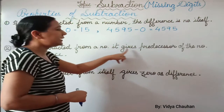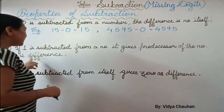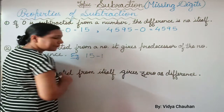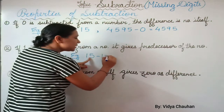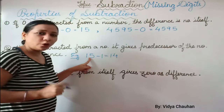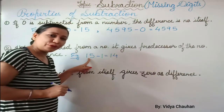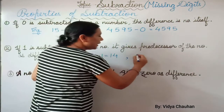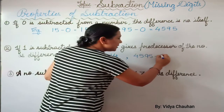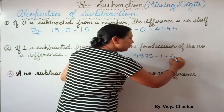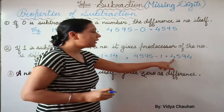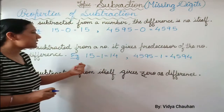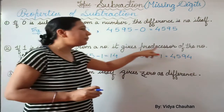The second property: if 1 is subtracted from a number, it gives the predecessor of that number. For example, 15 minus 1 equals 14, and 14 is the predecessor of 15 because 14 comes before 15. Similarly, 4595 minus 1 equals 4594, and 4594 is the predecessor of 4595. Subtracting 1 from any number gives its predecessor.